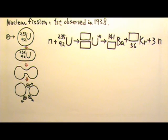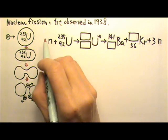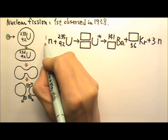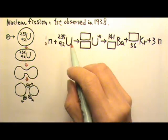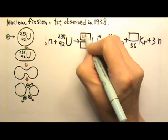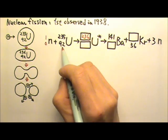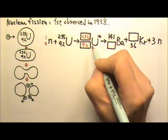To help us balance the equation, we can put in numbers for the neutron. A neutron has one nucleon and no proton. So this number here must equal to 1 plus 235, so it's 236. And this one is 0 plus 92, so it is 92.